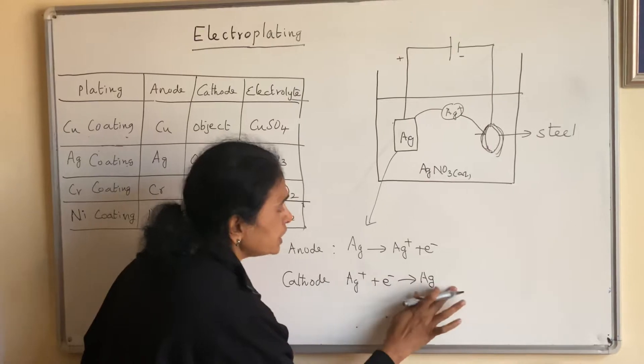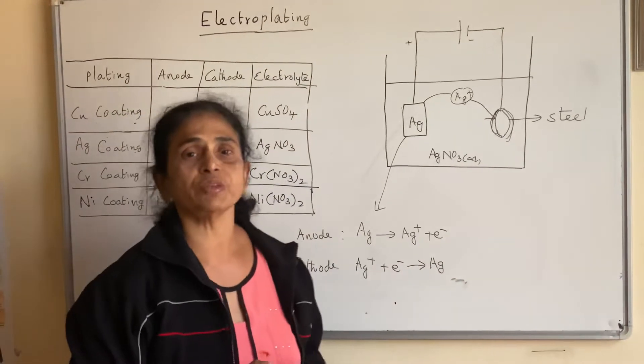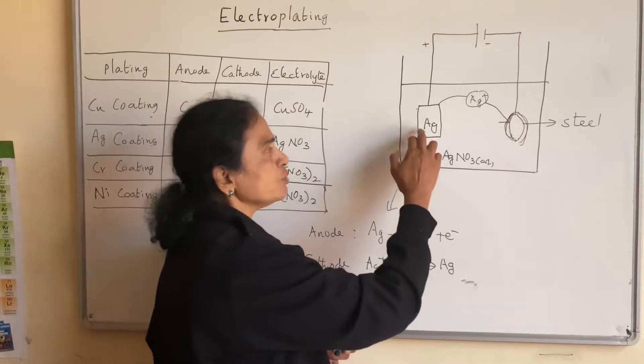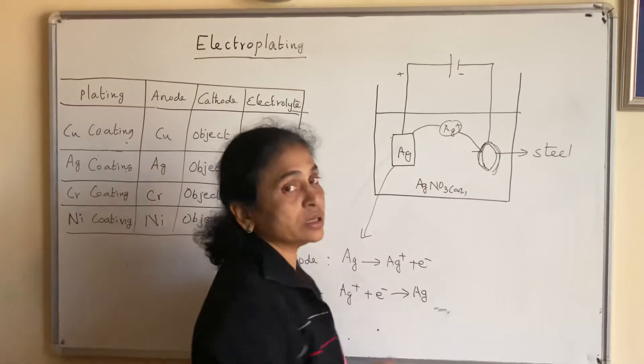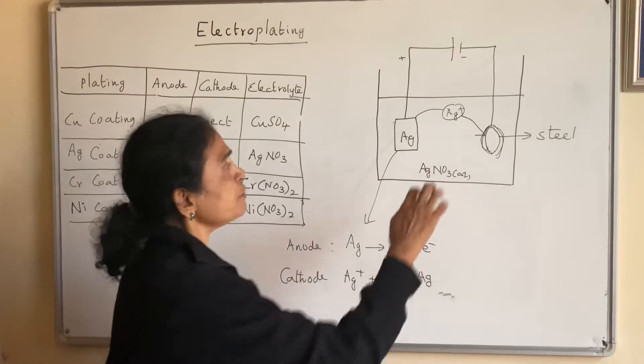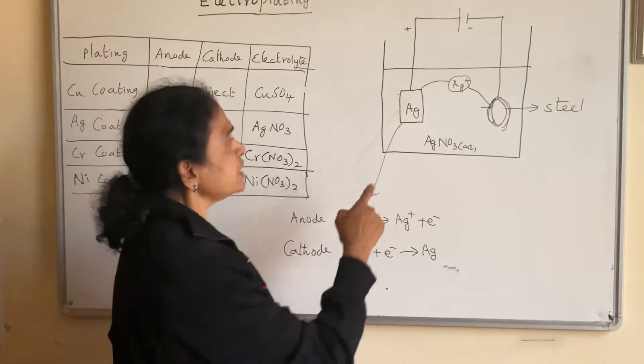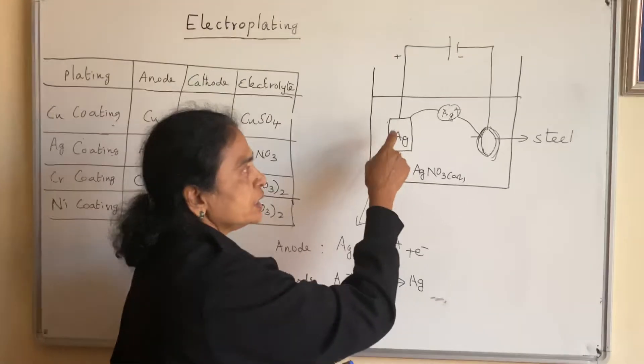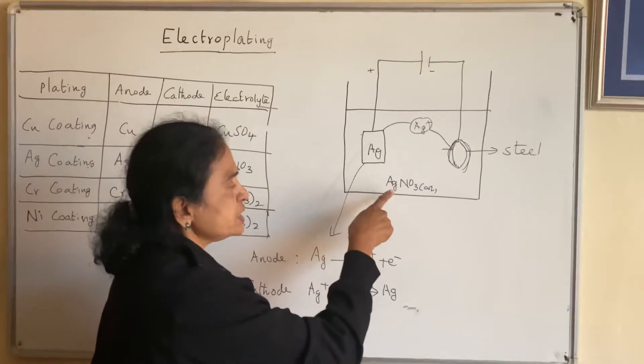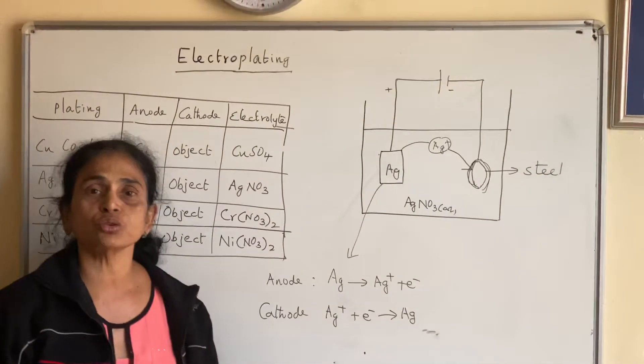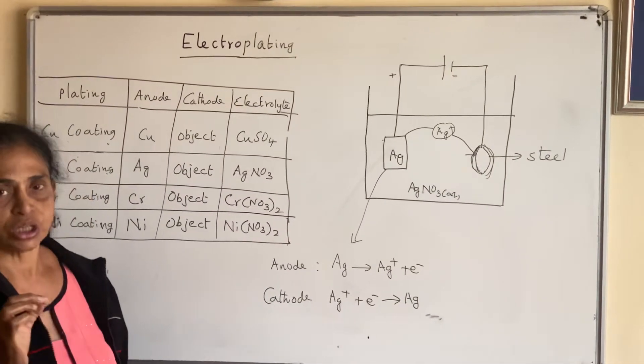Now what happened here. The concentration of the electrolyte does not change. If there are 5 moles of ions coming from this electrode, the same 5 moles of ions go from the electrolyte to this one. That is the reason why we should have the same element present in both of them. This is Ag+, this is Ag. So the concentration of the electrolyte does not change.